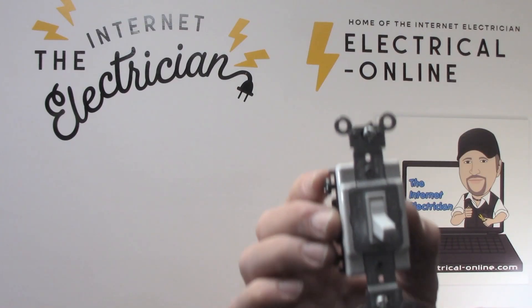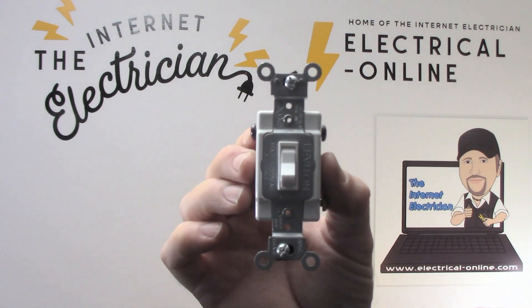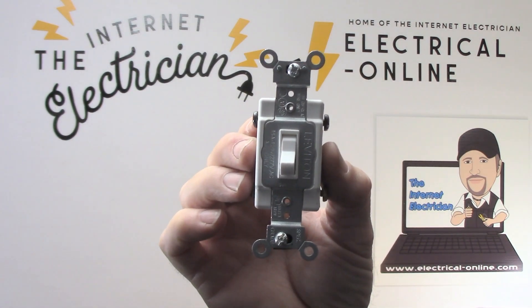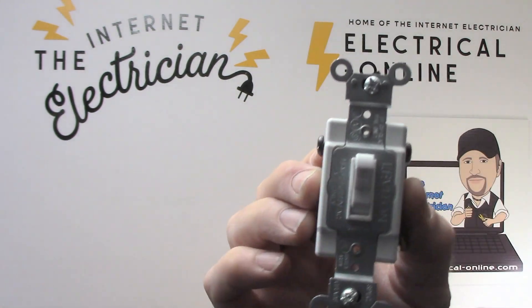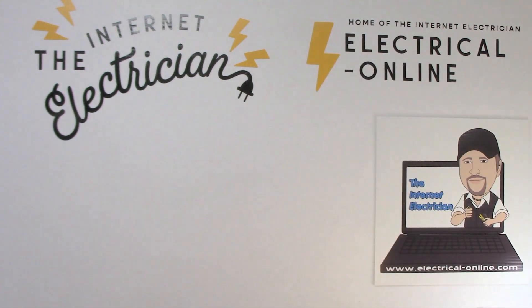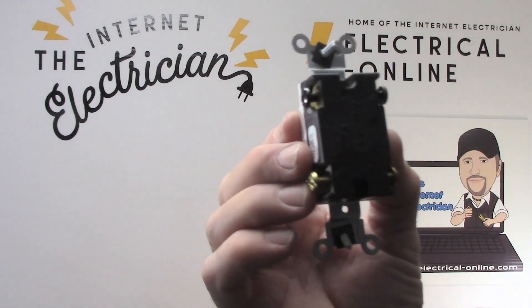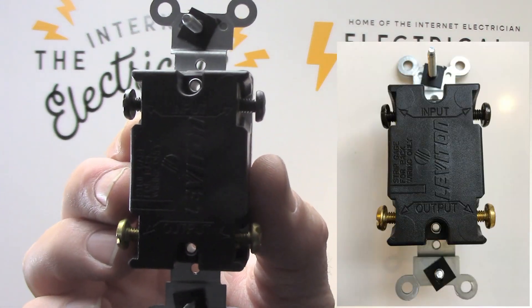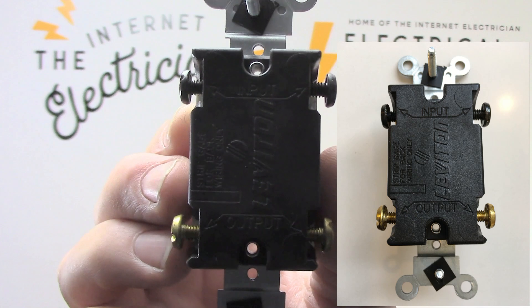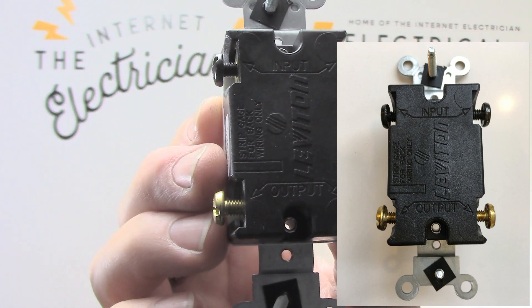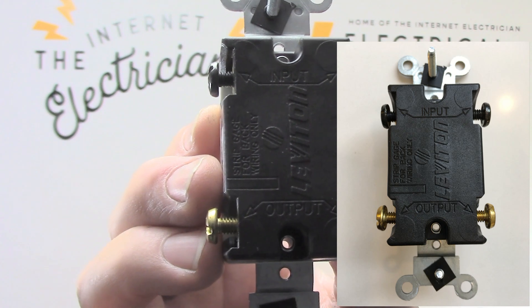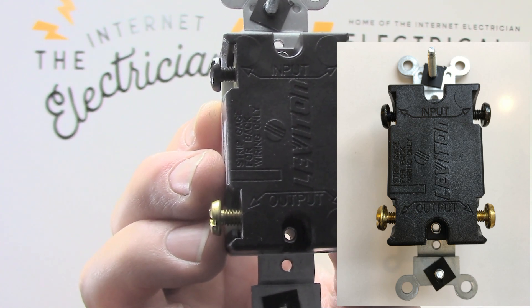So now let's take a close up look at the four way switch. As you see, there is no indication of on or off on the handle. No indication. And then looking at the back, we're going to go in for a nice close up. And you can see there. Input and output. As opposed to line and load on the double pull switch.